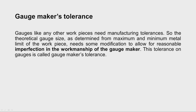It is always very expensive to produce gauges exactly to the maximum and minimum metal limits as suggested by the gauge designer. So, in order to achieve economy, some modification is allowed for reasonable imperfection in the workmanship of the gauge maker. This tolerance provided on the gauges is called gauge maker's tolerance.